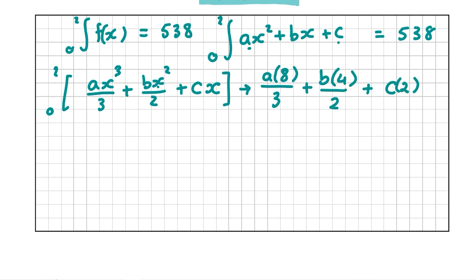So first of all, I'm going to fill in x for 2. So it's going to be A × 2³ which is 8, divided by 3, plus B × 2² which is 4, divided by 2, plus C × 2. And what you usually would do here is you would take away whatever this is filled in with the bottom term, but because it's 0, it's just going to be 0. So now we have 8A/3 plus 4B/2 plus 2C = 538.